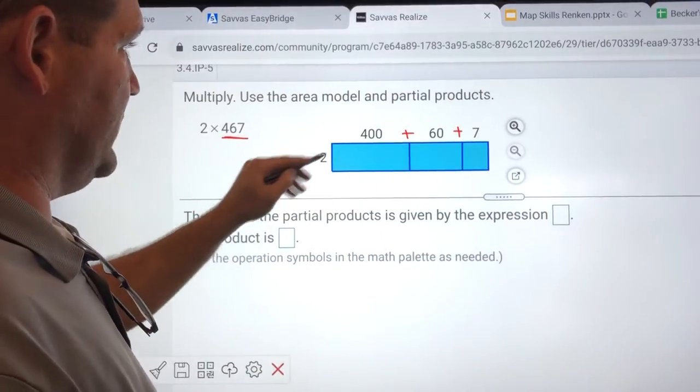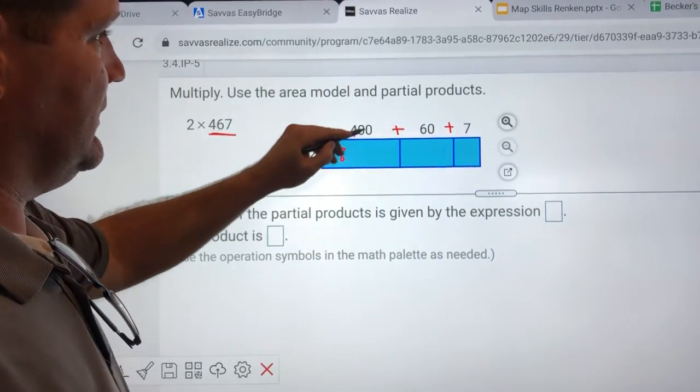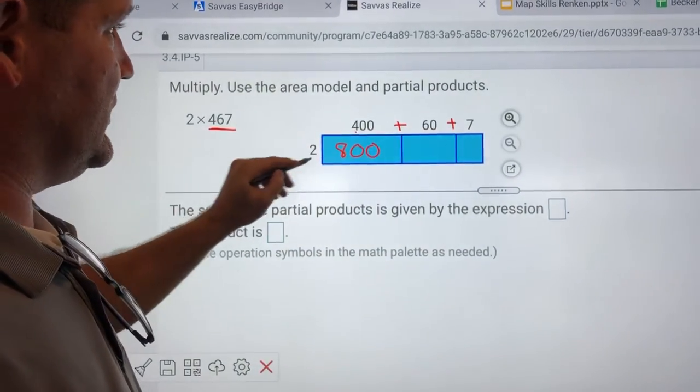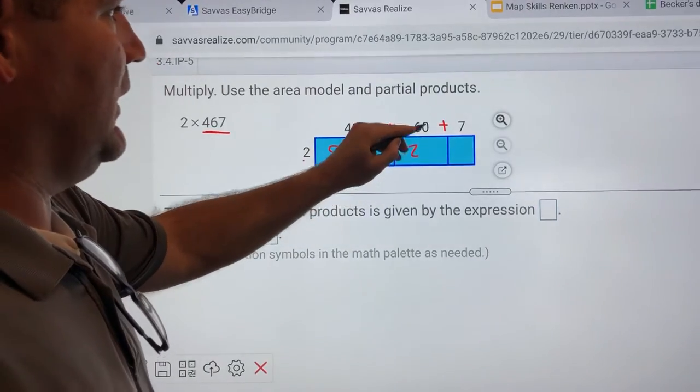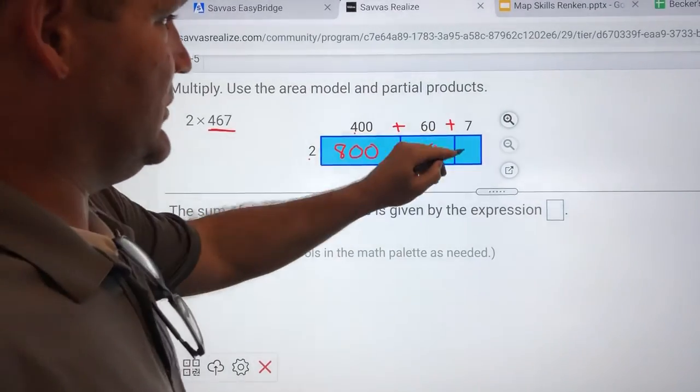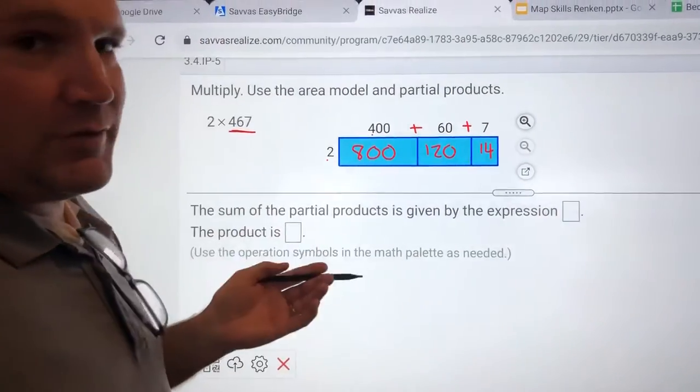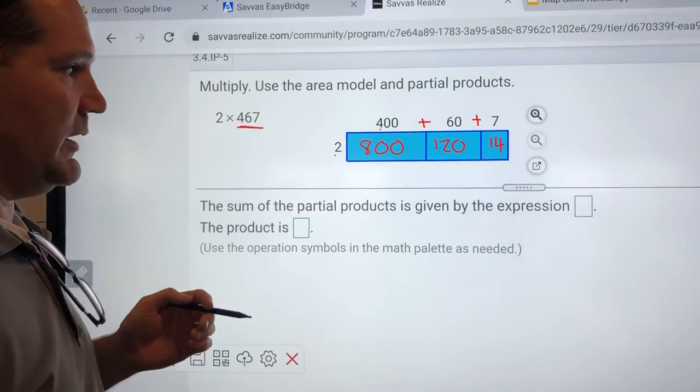Now, 400 times 2: 2 times 4 is 8, add the two zeros. 6 times 2 is 12, add the zero. 7 times 2 is 14. There's your math problem. We've already been doing this the last couple days.